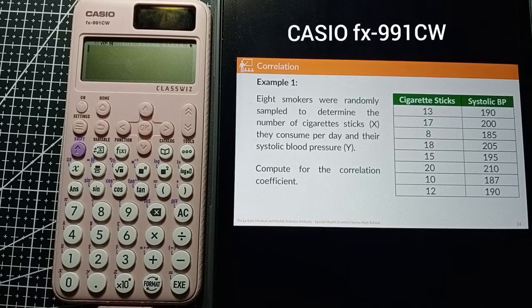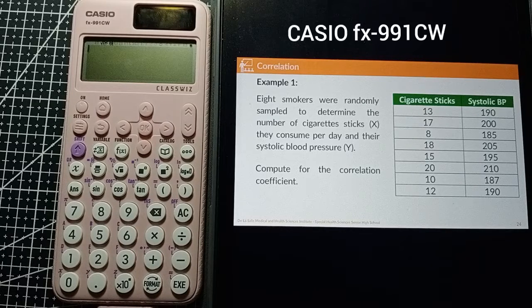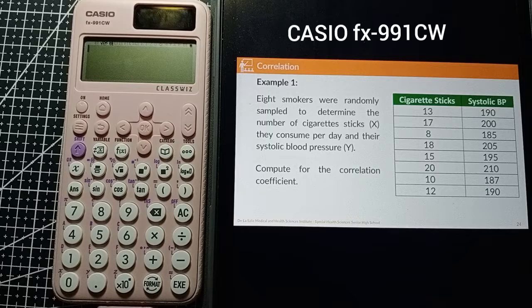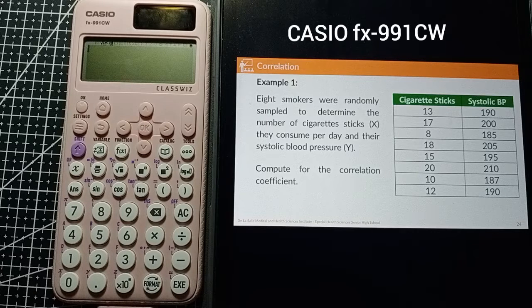This is a video tutorial for calculator shortcuts for correlation and regression analysis using the Casio FX-991CW ClassWiz.